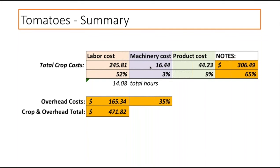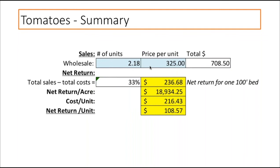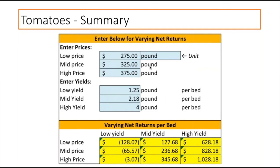I did the same thing for tomatoes. The biggest change is there's definitely more cost of producing tomatoes, especially when it comes to labor. The price is a little higher. Our average yield was 2.2 pounds per hundred feet. Our net return was actually a little bit less than the lettuce, mostly because the costs of production are a little higher. The sensitivity table shows more or less the same thing: low price, low yield, you're in the negative. It's got some good potential.